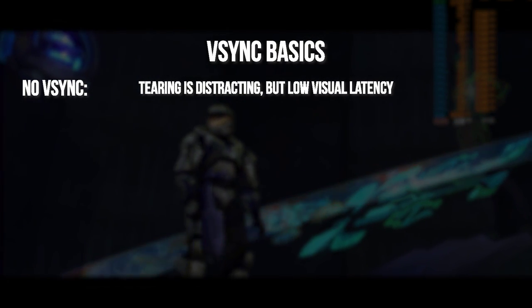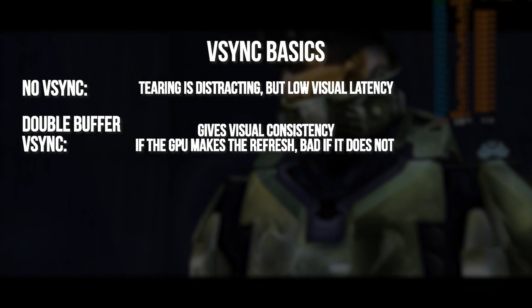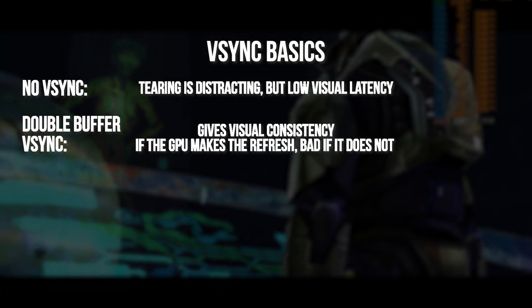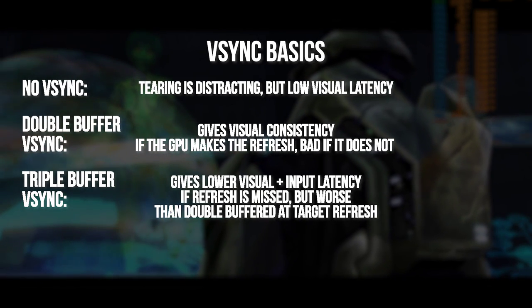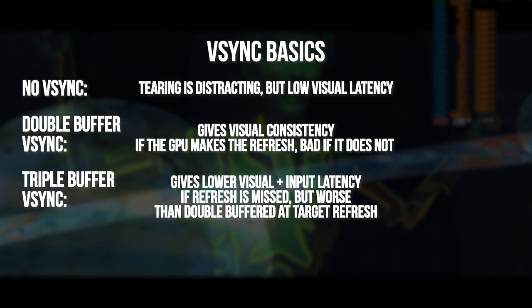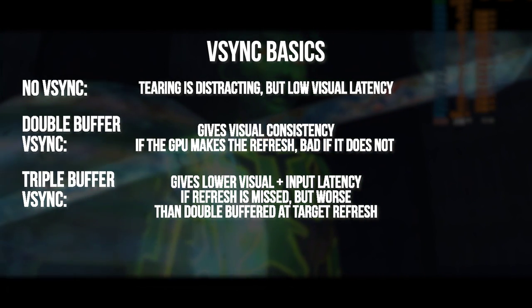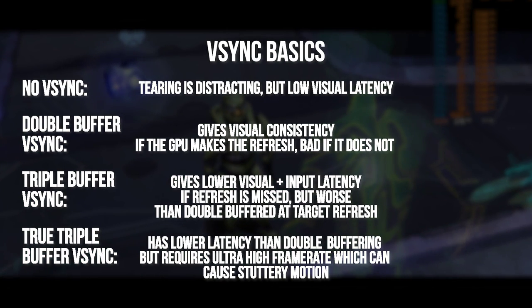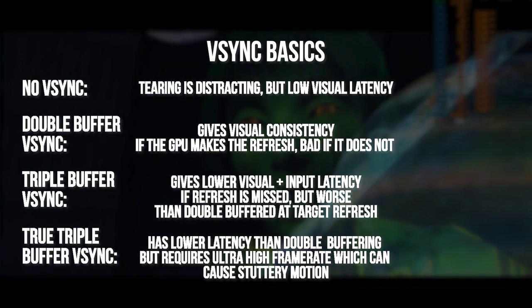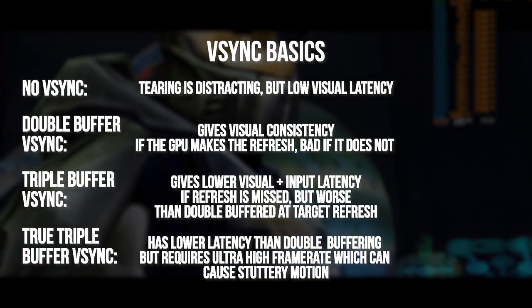Let's recap. Without VSync, you get tearing and it's pretty distracting. With double-buffered VSync, you get more input latency but visual consistency if the frame rate can be maintained at 60 or 30. Standard triple buffering gives you slightly worse input latency at the refresh rate target, but more visual information and better input latency at intermediate frame rates like 45fps. True triple buffering gives you no tearing and the best input latency, but requires a GPU capable of frame rates two times higher or more than the refresh rate — with a downside of potentially jittery and stuttery visual movement on screen.